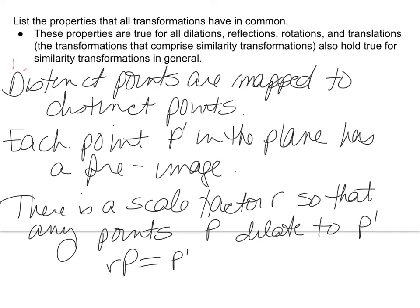Okay, here are the first three. First of all, distinct points are mapped to distinct points. Next, each point P' in the plane has a pre-image, which we usually name P. Third, there is a scale factor R, so that any points P dilate to P', or the scale factor times P equals P'. Okay, there are a few more, so next slide.